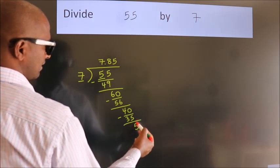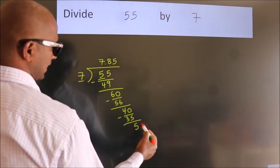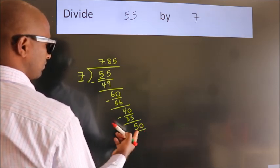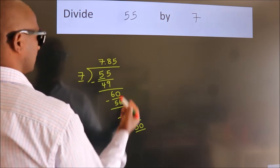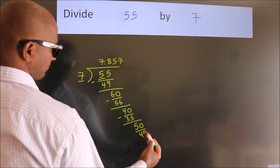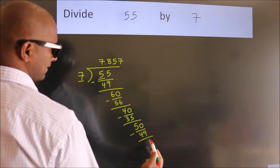After this, we already have the decimal. So, directly take 0. So, 50. A number close to 50 in the 7 table is 7 times 7 equals 49. Now, we subtract. We get 1.